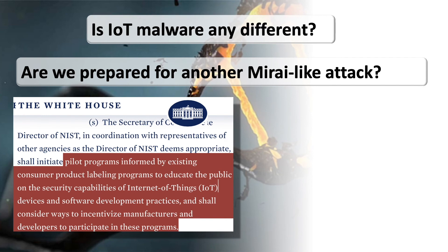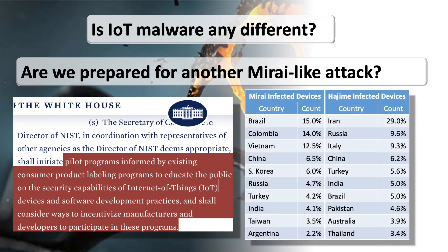Nevertheless, IoT malware does not know borders, and it's a global problem. Safety labels might impact the U.S. consumer segment to practice safe IoT purchasing, but they neglect the global aspect of IoT devices. For example, according to the original Mirai and Hajime paper, the U.S. and most of Europe does not even make up the top 10 countries of infected devices.